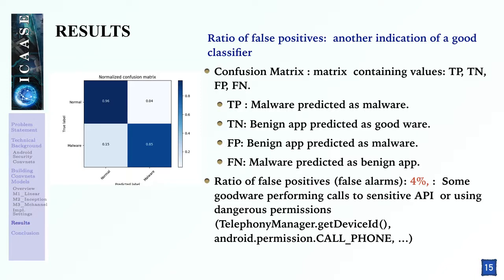Another indication of a good classifier is the ratio of false positives. The figure here shows the confusion matrix corresponding to the inception model, which contains TP, TN — malware and benign applications classified as such — and FP, which are benign applications classified as malware. The false positive ratio is 4%, meaning that out of 100 benign applications, the classifier misclassifies four of them as malware. This ratio is due to the fact that some legitimate applications perform calls to sensitive APIs or use dangerous permissions such as TelephonyManager, getDeviceID, or the Android permission CALL_PHONE.